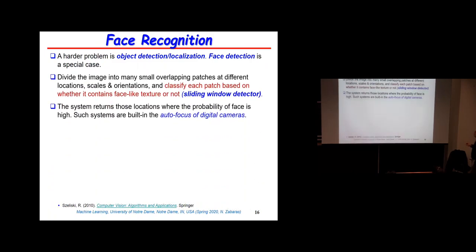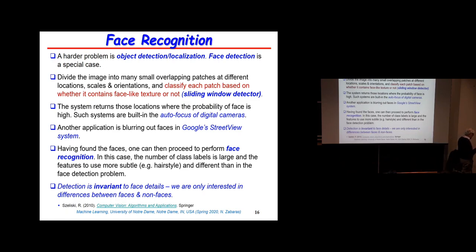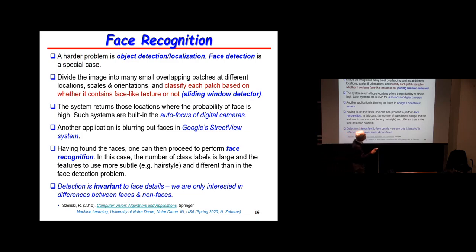Face recognition: when you take a picture on your phone, it recognizes all the faces. It uses a moving window representation and when it finds a face, it stops. It doesn't extract features of the face or tell you if it's a man or a woman — it tells you there is a human being there. The same thing is used in Google's Street View application: they locate faces and mark them out so you don't see them in the posted images.